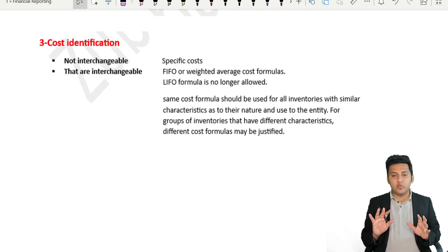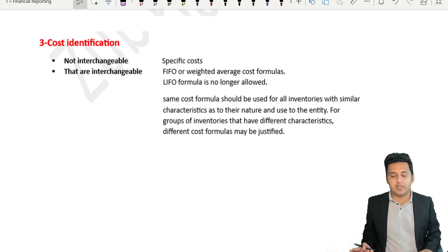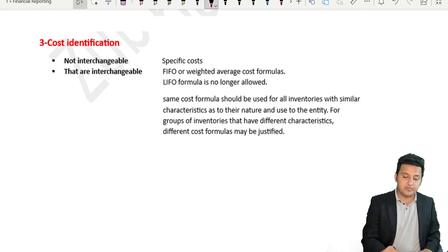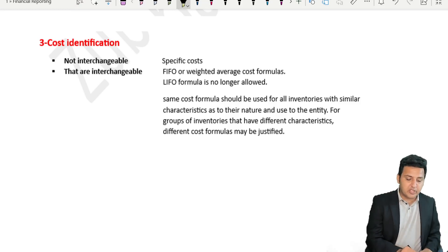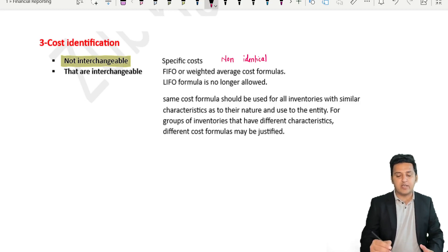There are two types of inventories — when we are in trade or when we produce inventory ourselves, there are two types of products. First, the products are not interchangeable. Not interchangeable means non-identical.